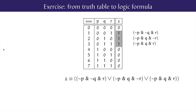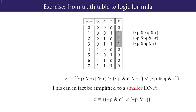So going back to the exercise, transforming from truth table to logic formula, we had three rows out of eight in the truth table in which the output Z is true, with eight rows coming from the three inputs. So we ended up with a size three disjunction of size three conjunctions. Using instances of known tautologies, we can in fact simplify this canonical DNF to a much smaller DNF, concluding that Z can be characterised by the simpler formula NOT P and Q or NOT P and R.